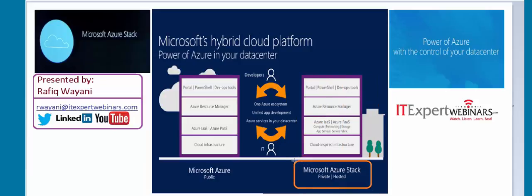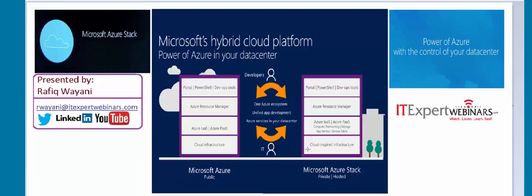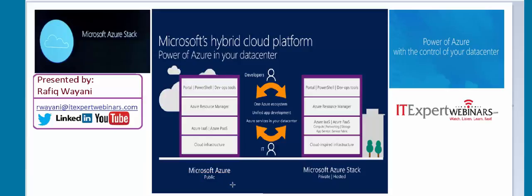What if you want to host your application in your own data center most of the time, but sometimes you want access to public resources? You want to mix and match — you want to decide when you want to be private and which applications are going to be private and which applications will be public. Not only that, you want to decide which ones will be private up to what time and when they will be hosted in the public environment.